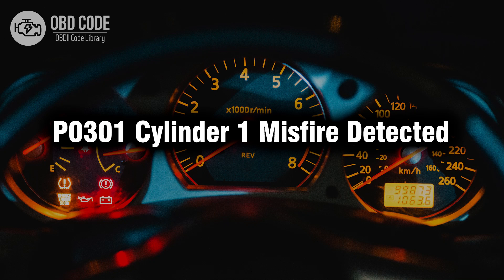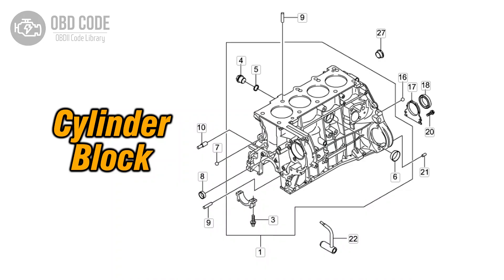Welcome. In this video we will talk about code P0301, its symptoms, causes and possible solutions. The P0301 trouble code is associated with Cylinder 1 misfire detected, indicating that there is a misfire specifically in Cylinder 1.